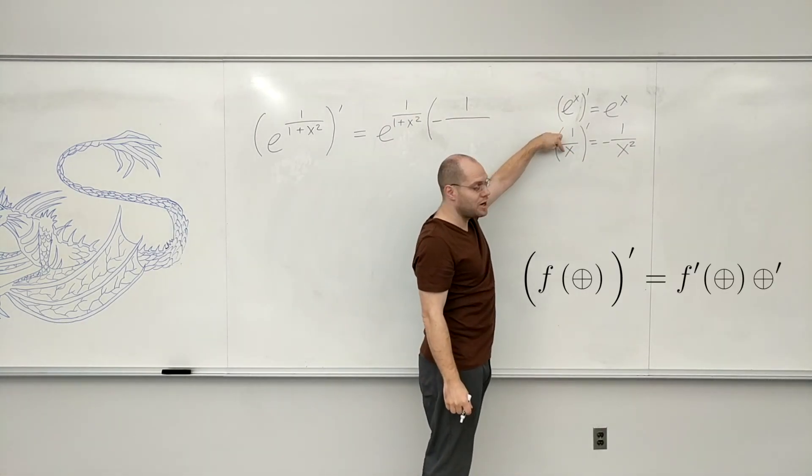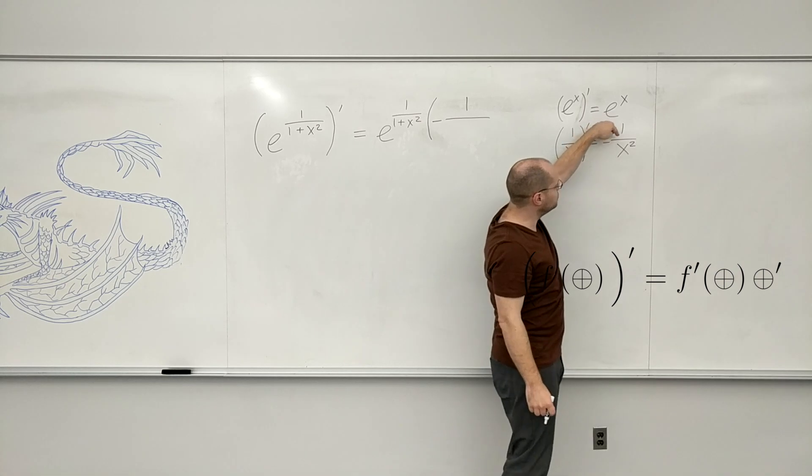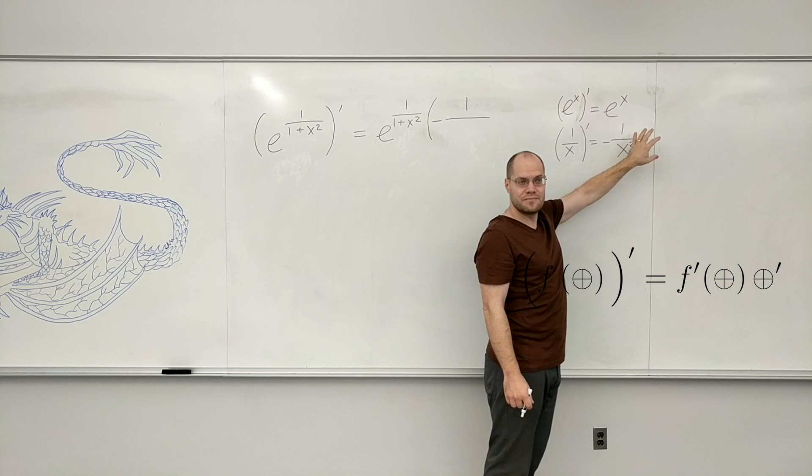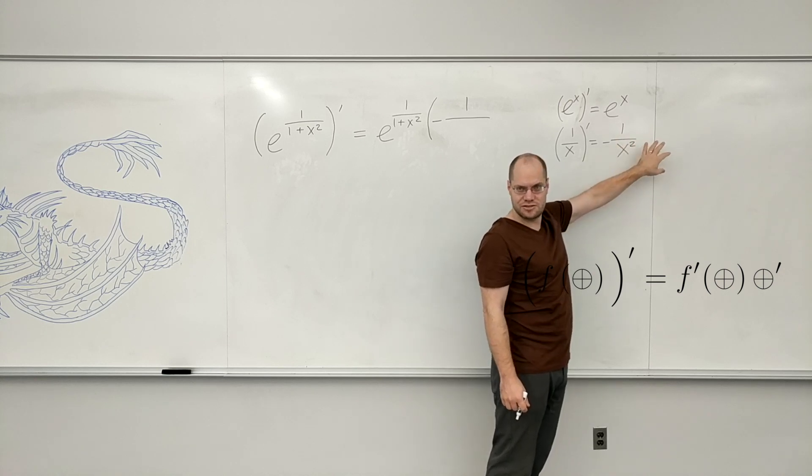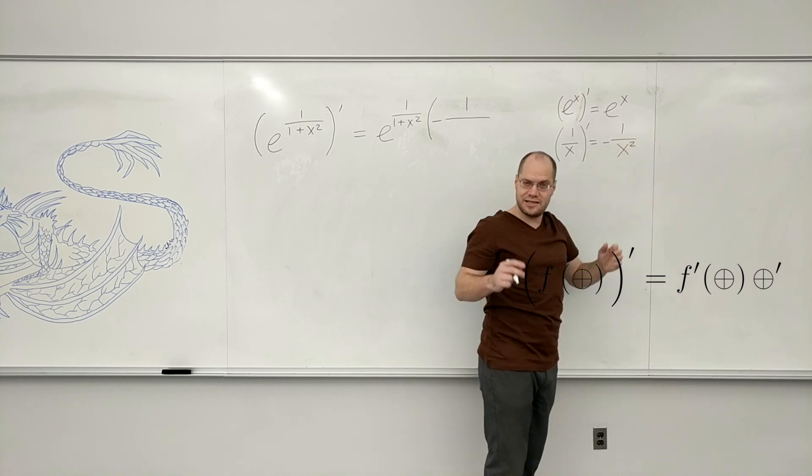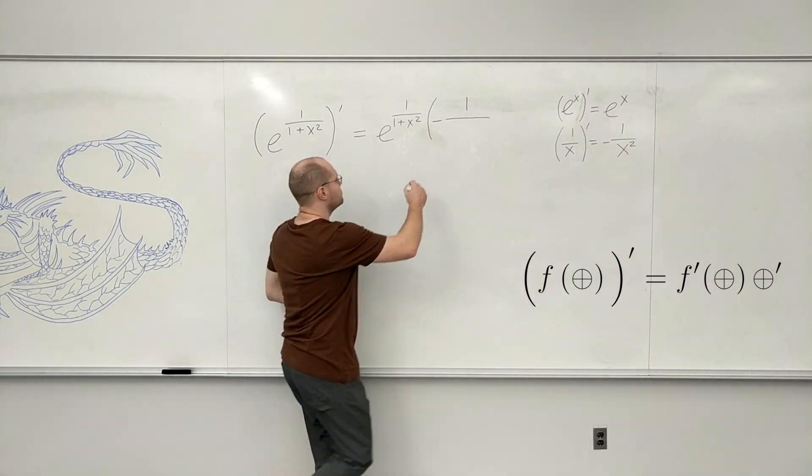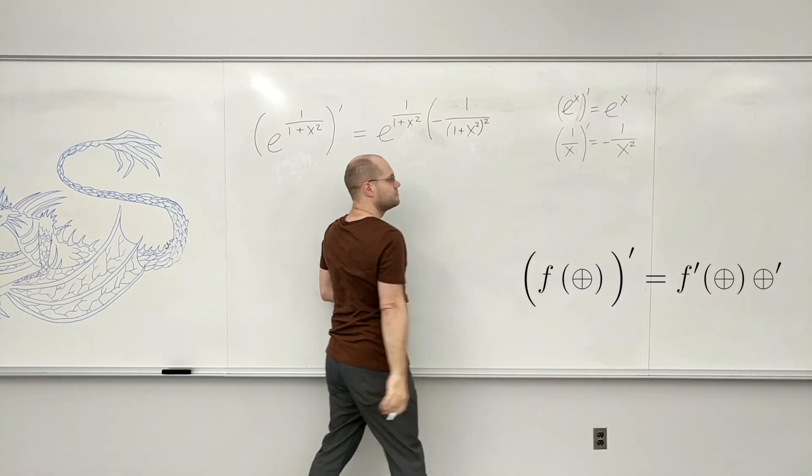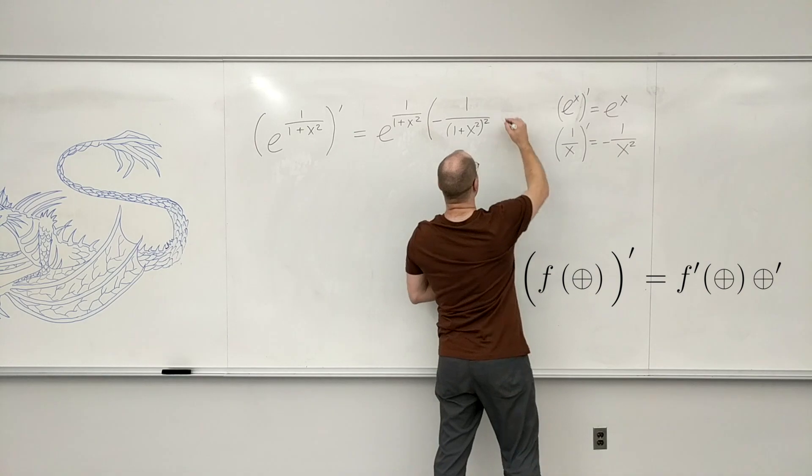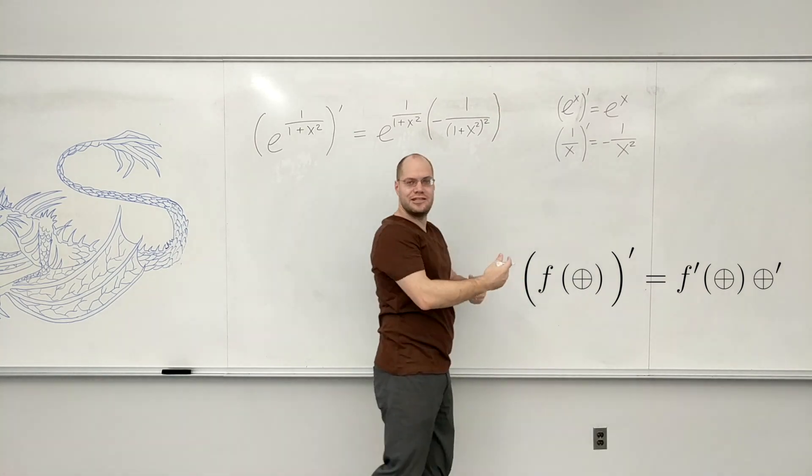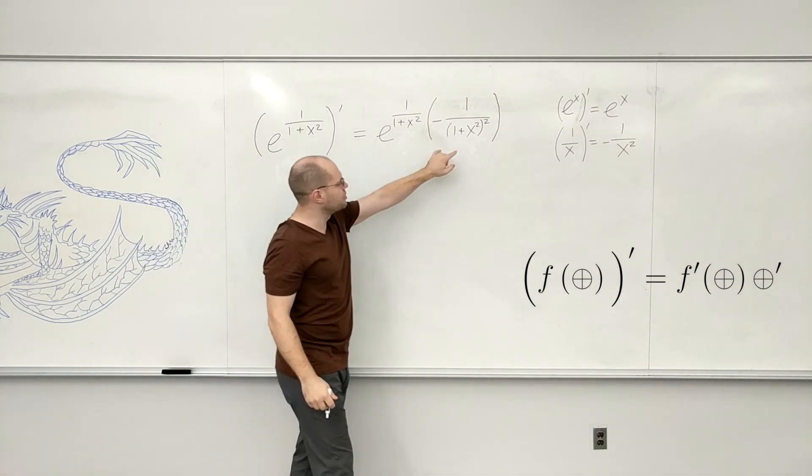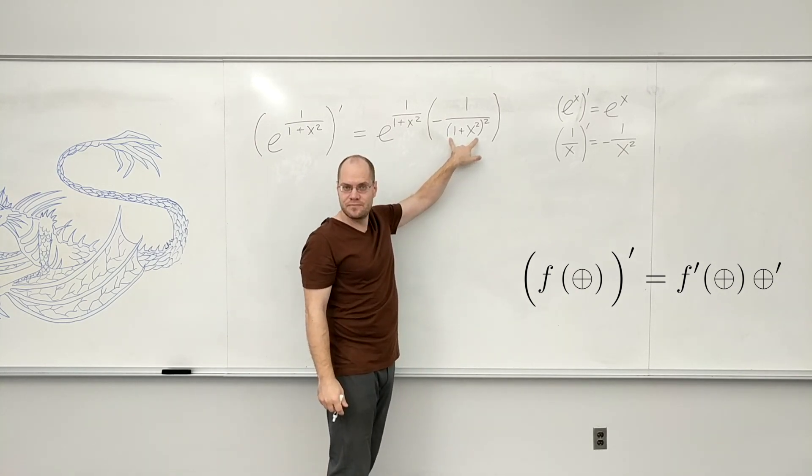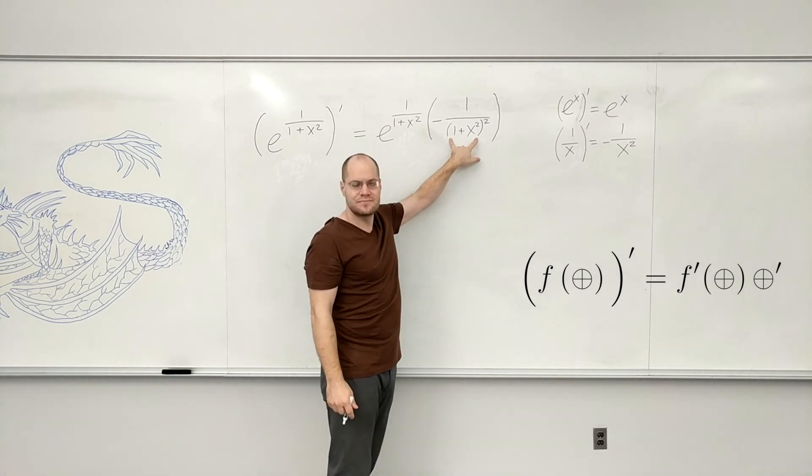It'll be minus 1 over... So it's 1 over something, and the derivative of 1 over something is minus 1 over that something squared times the derivative of that something. It becomes 1 plus x squared squared, and we're done with this part. Now we have to roll to the next link in the chain rule - that's to take the derivative of that something.